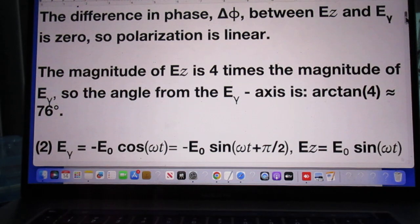However, the magnitude of E_z is four times the magnitude of E_y. So the angle from the E_y minus axis is the arc tangent of four, which is about 76 degrees. I have added below a picture of this solution. So I will go down now.